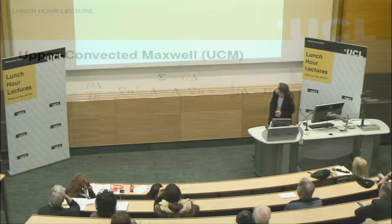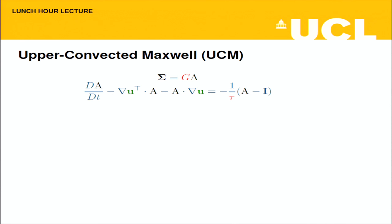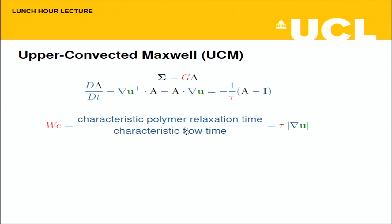That gives us equations with two key parameters: G, the strength of the spring, and tau, the relaxation time of the spring. That model is called the upper convective Maxwell model, or UCM, around since 1950 or possibly earlier. The dimensionless number characterizing flow rate is the Weissenberg number — flow rates made dimensionless using the relaxation time.